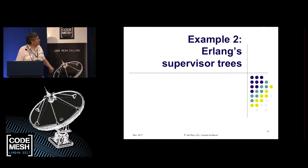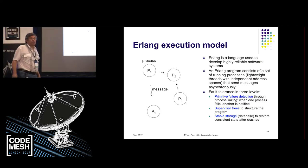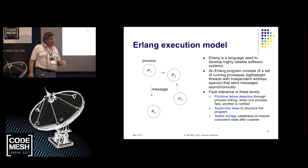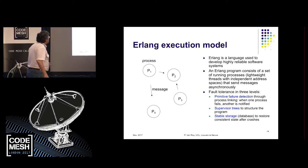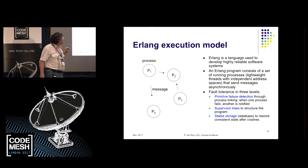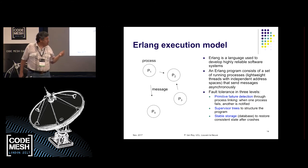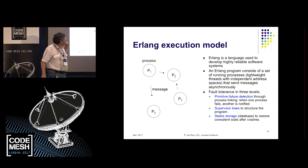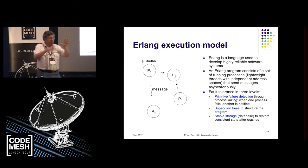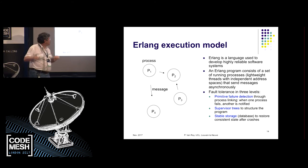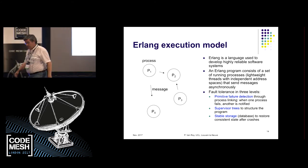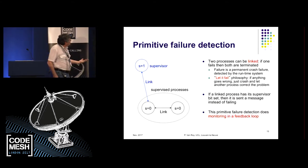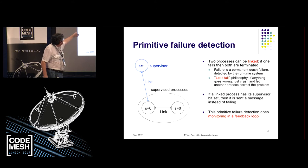Let me connect this to Erlang's approach to fault tolerance — the supervisor tree. Erlang is used for developing extremely reliable software. You have a set of running processes with independent memory spaces, all concurrent, sending messages asynchronously. Fault tolerance is done at different levels: primitive failure detection by linking, supervisor processes, a supervisor tree where supervisors can be nested, and stable storage to restore consistent states when there's a crash.